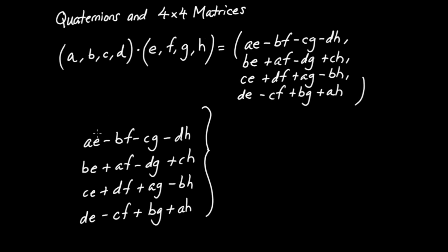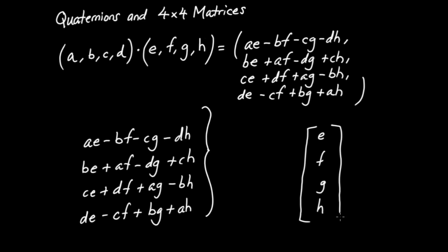The vector is going to be given by E, F, G, and H — it's going to be a four-by-one column vector. And what is the coefficient matrix? Notice it's going to be a four-by-four matrix. I have four equations, each containing four terms, or four variables.